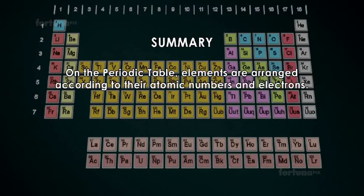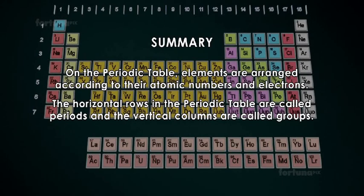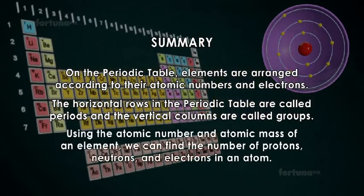Using the atomic number and atomic mass of an element, we can find the number of protons, neutrons, and electrons in an atom.